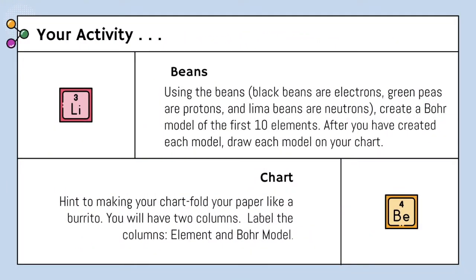Today our activity is going to be using beans. Black beans are going to be electrons, green peas are going to be protons, and lima beans are going to be neutrons. We're going to create Bohr models for the first 10 elements, and after you've created each model, you're going to draw each model on a chart. To make your chart, you're going to fold it in half like a burrito — horizontally into two columns. You'll label one column 'element' and the other column 'Bohr model.'